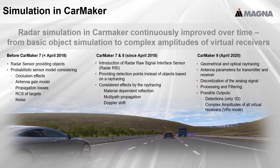IPG introduced in CarMaker 7 the radar raw signal interface. This model provides detection points instead of traffic objects. These points are generated by ray tracing, which takes effects like different materials, multipath propagation, and Doppler shift into account. At that point, we started working with CarMaker. We are using the CCode API to integrate our own functionality. Our sensor model ensures similarity between real and virtual data. But some problems could not be solved, which led us to get in touch with the developers on IPG's side to further improve the radar simulation in CarMaker 9.